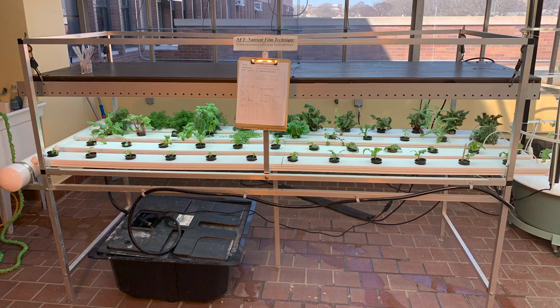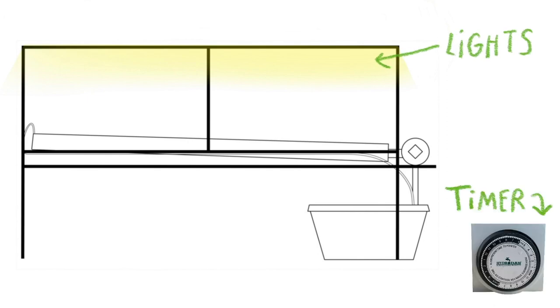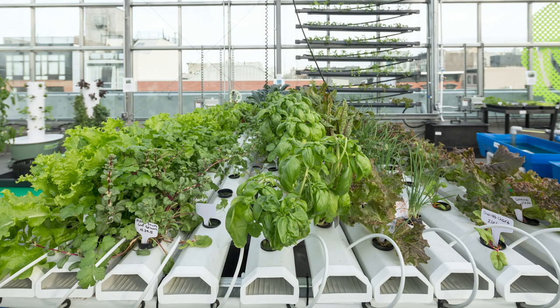This is the NFT. It's made of many important parts. Let's take a look. The lights at the top of the NFT are controlled by a timer. The timer makes sure that the lights turn on only when the plants need them. In a rooftop greenhouse, the light the plants need comes from the sun.